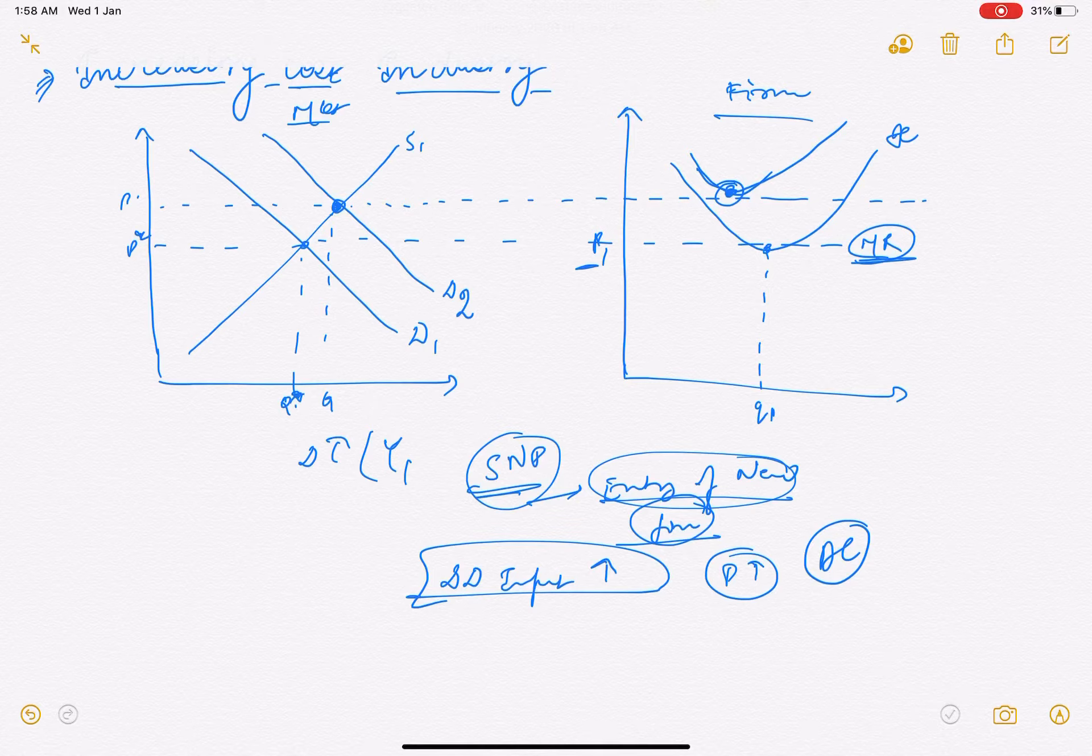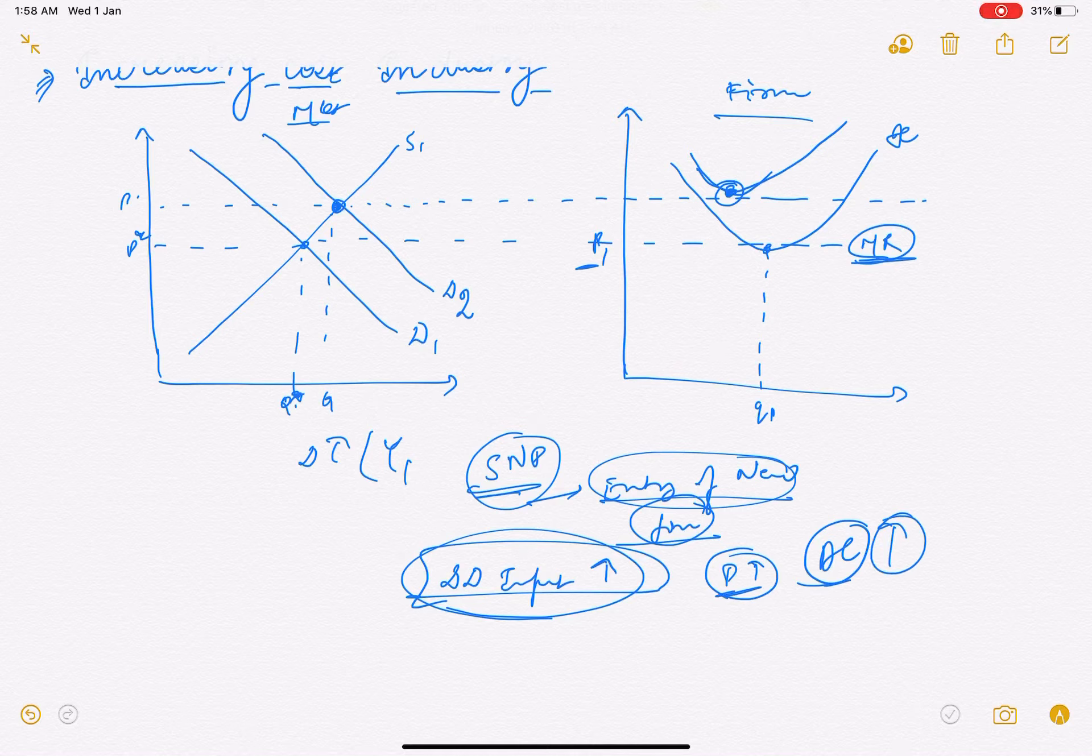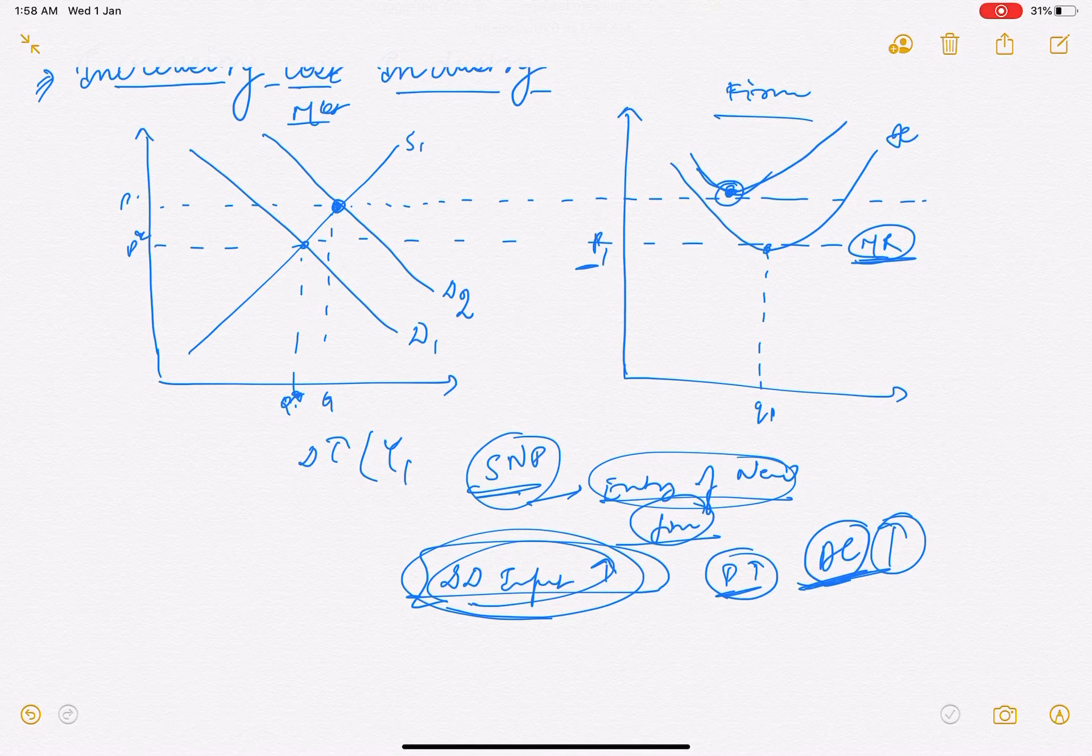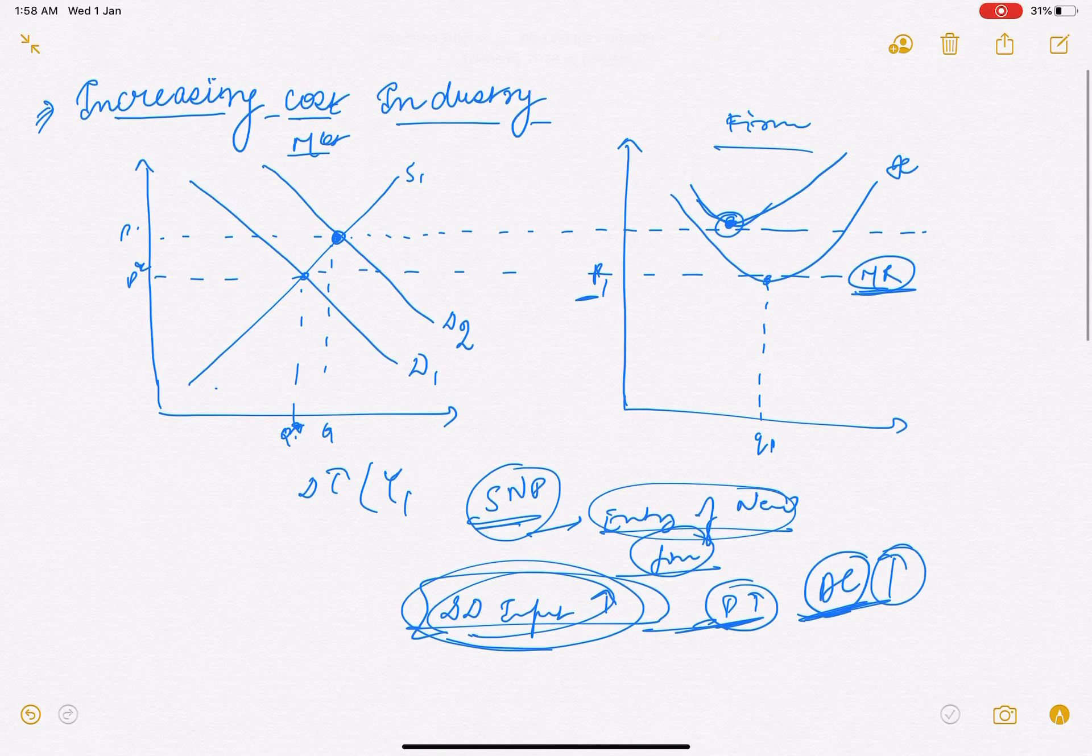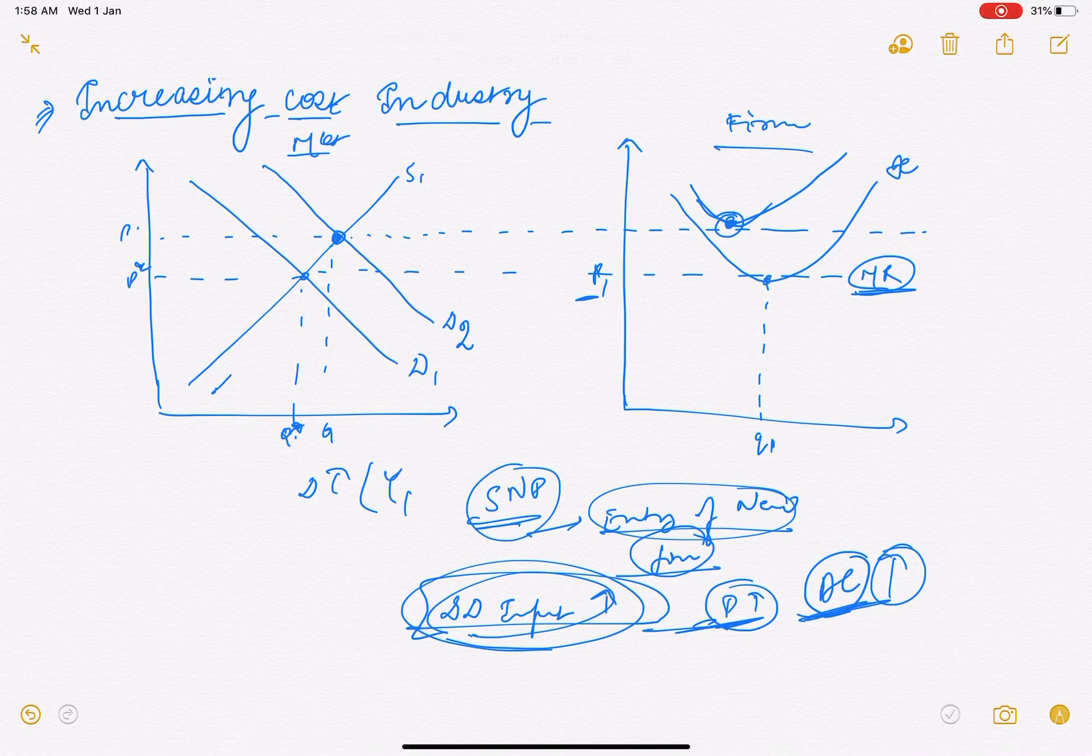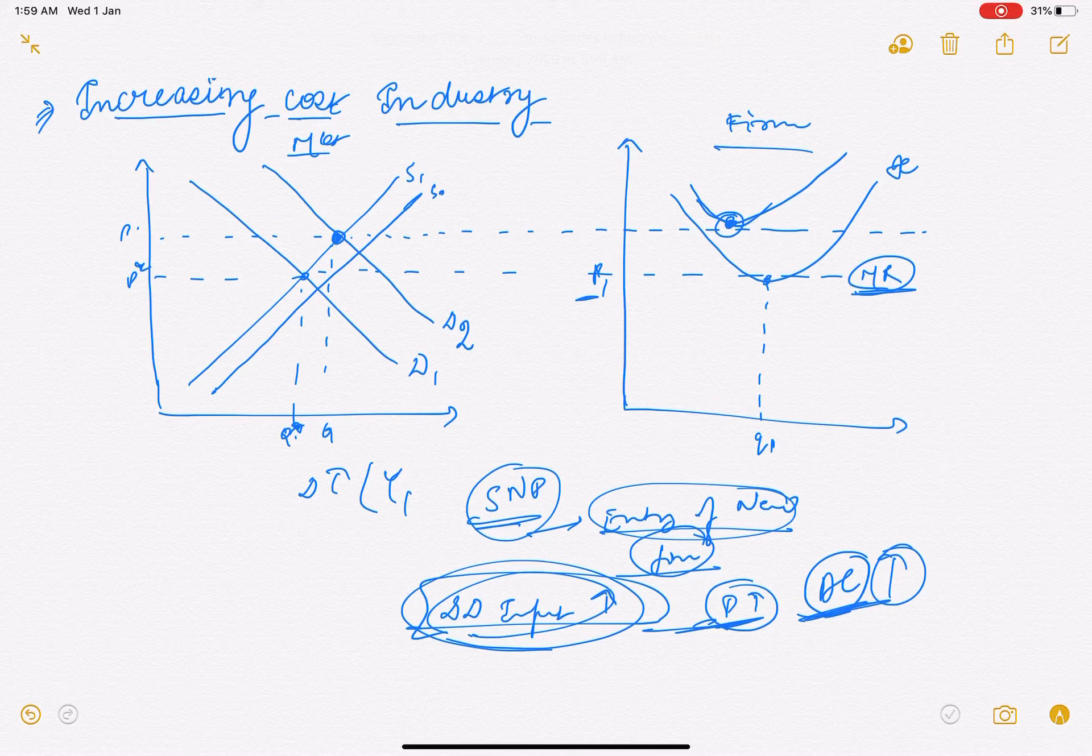Toh uski wajah se average cost kis ka - input ka bhi badh gaya. Price badh gaya, demand for the inputs ka, toh average cost bhi badh gaya. Jab hamara average cost badhta hai toh hamari supply - new industries iss kar rahi hai but supply curve ka jo hamara constant industry curve ke andar jo increase tha that was this much. Is ke andar hamara input ka bhi cost badh gaya toh itni zyada jo supply hai ho nahi hogi. Supply would not be of the same magnitude jitna demand ka magnitude tha - supply would be less.